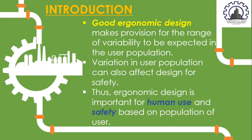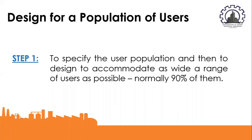Anthropometric data are used in ergonomics to specify the physical dimensions of workspaces, equipment, furniture, and clothing to ensure that physical mismatches between the dimensions of equipment and products and the corresponding user dimensions are avoided. The first step in designing for a population of users is to specify the user population, then design to accommodate as wide a range of users as possible — normally 90% of them.